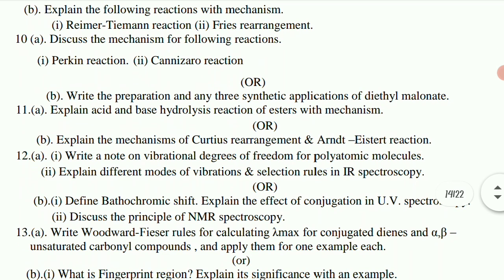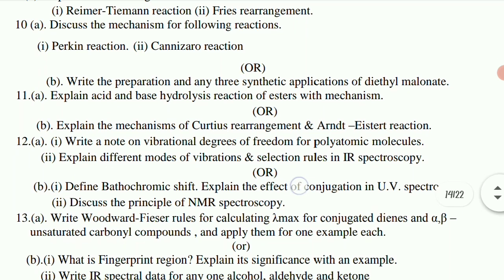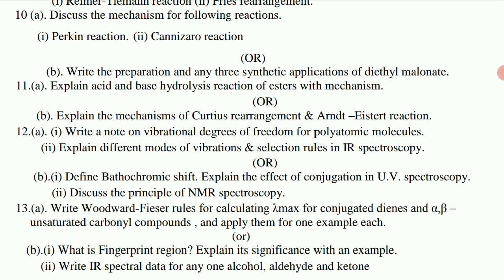Thirteenth: A. Write Woodward-Fieser rules for calculating lambda maximum for conjugated dienes and alpha-beta unsaturated carbonyl compounds, and apply them for one example each. B. What is fingerprint region? Explain its significance with an example. C. Write IR spectral data for any one alcohol, aldehyde, and ketones.